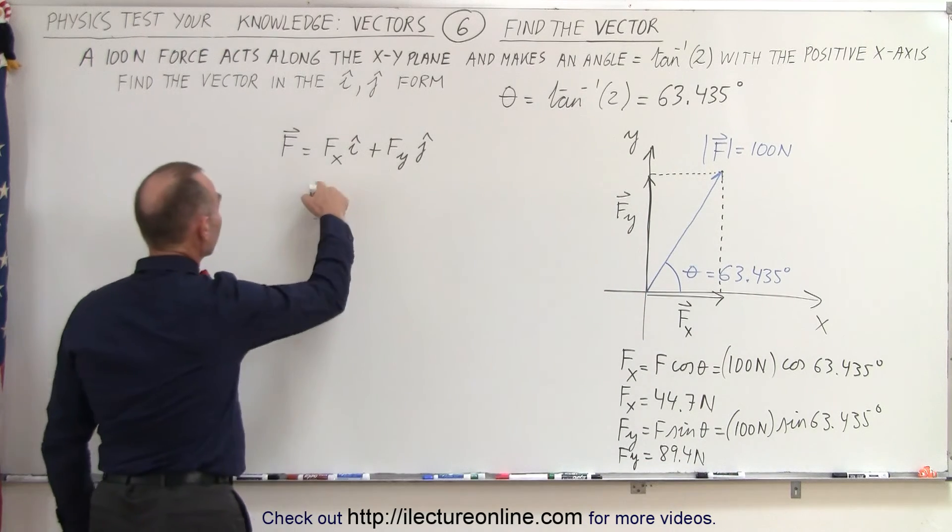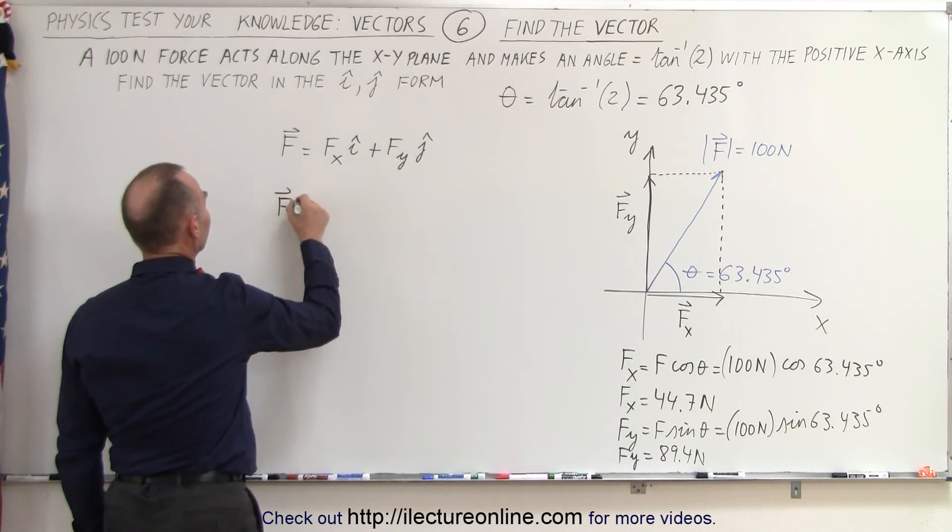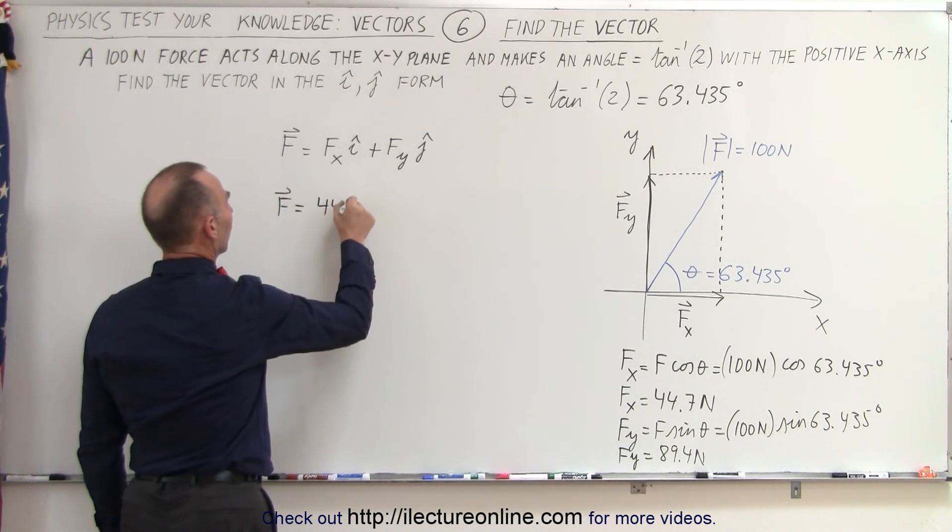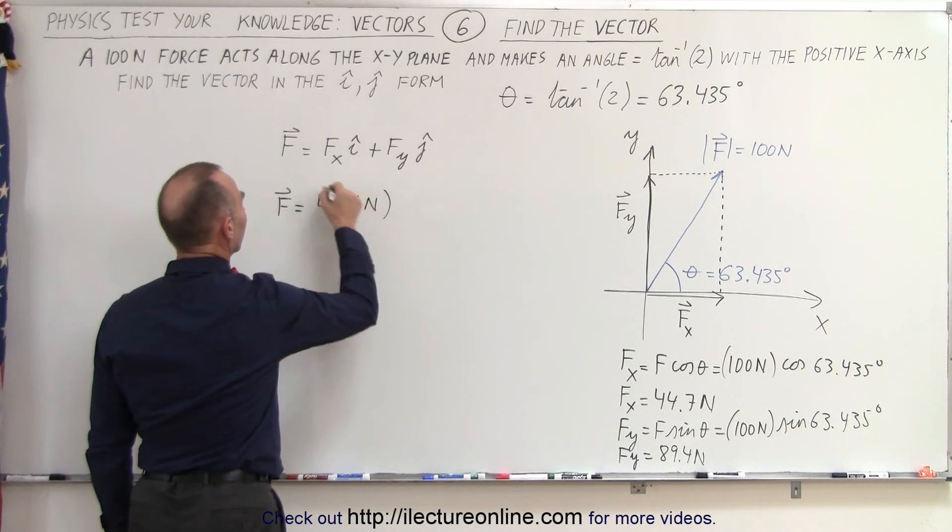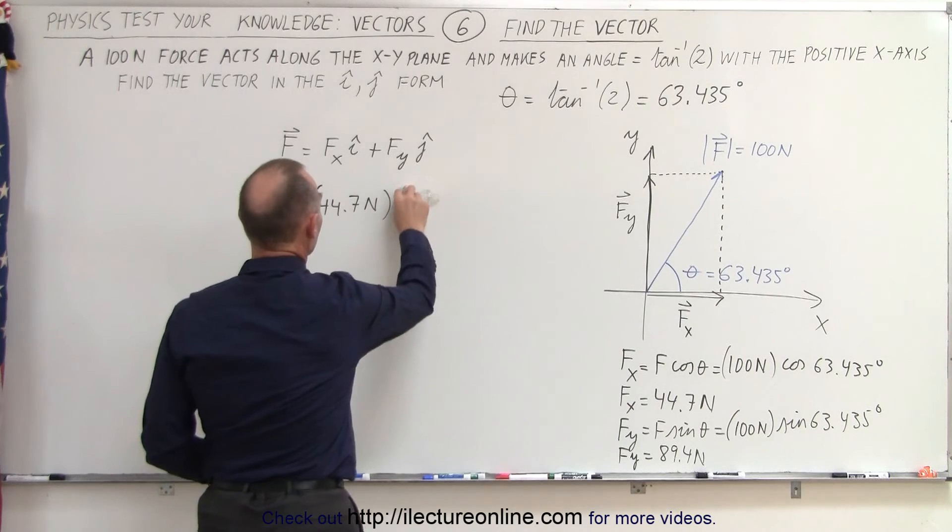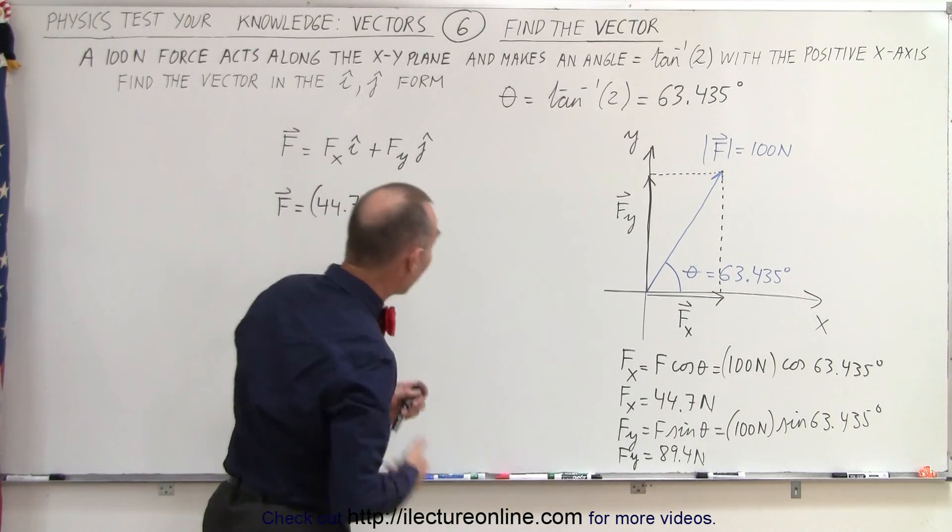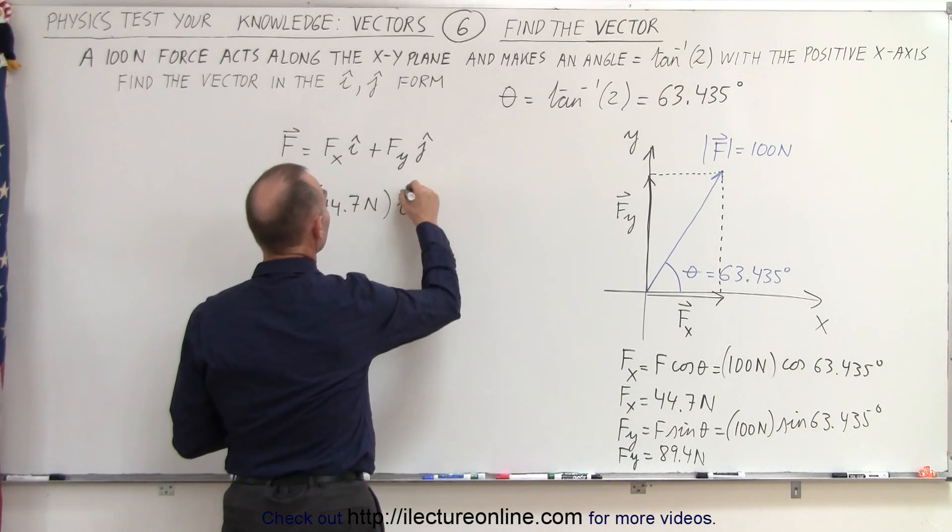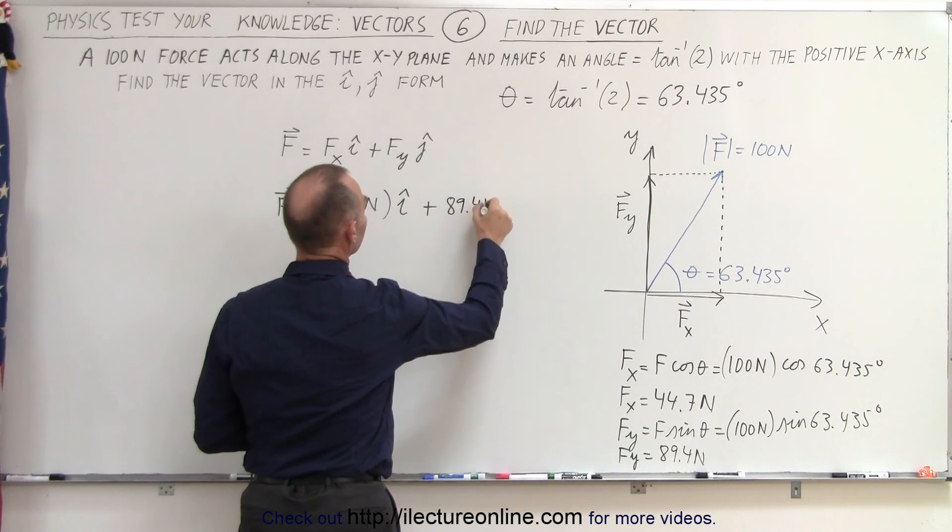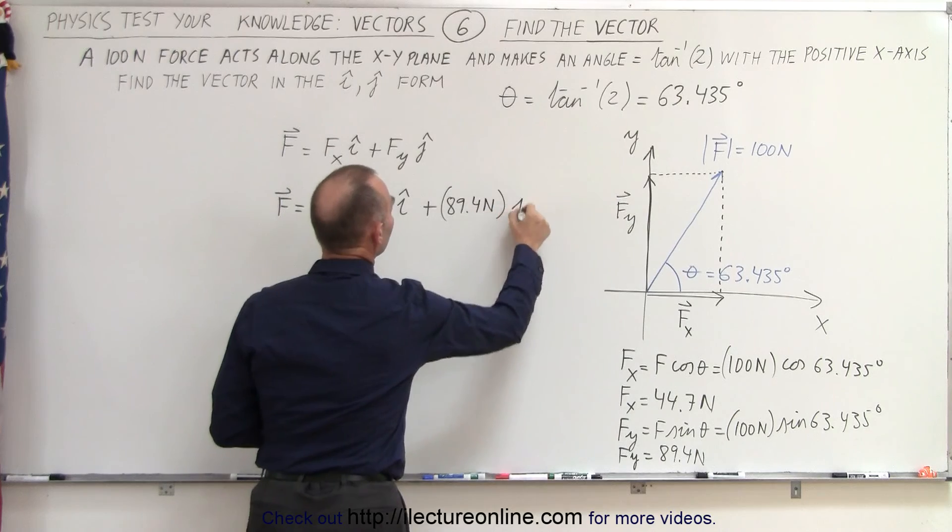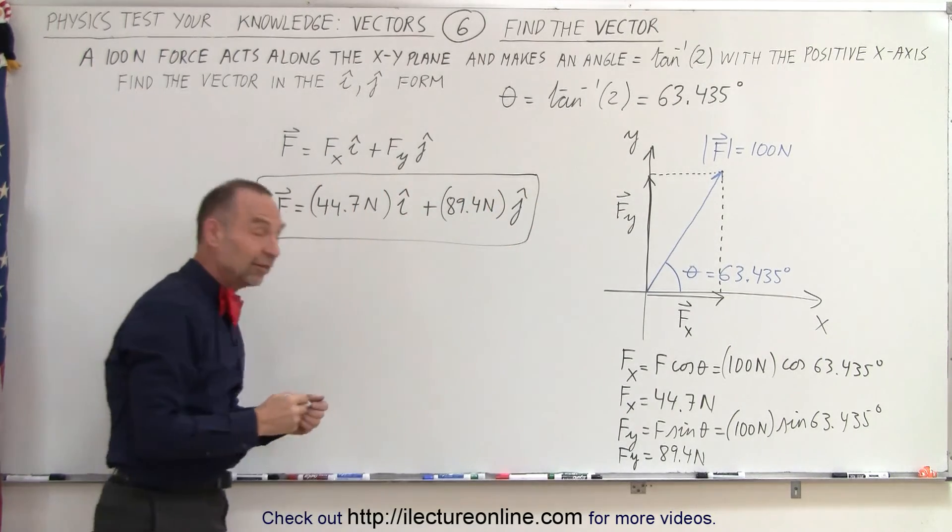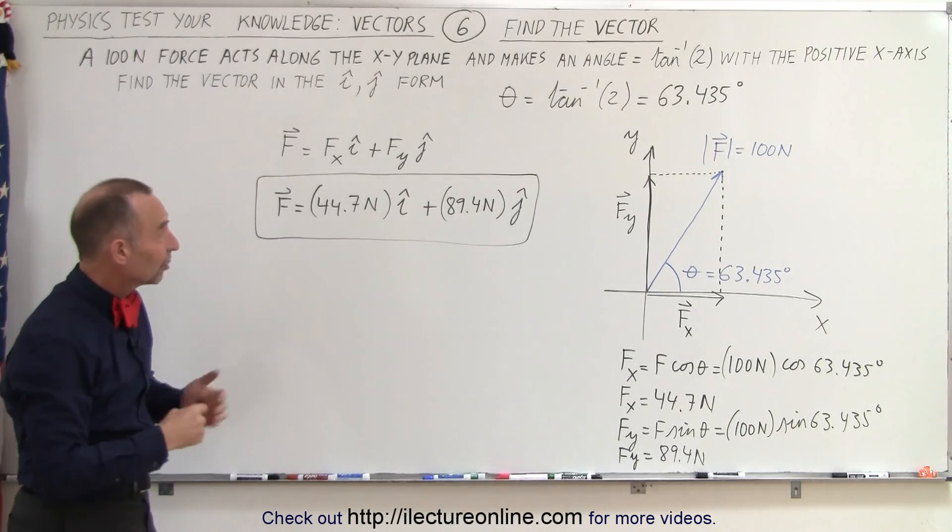So finally, when we plug those components in here, we have that the force vector F is equal to 44.7 Newtons in the X direction or the I direction. So we can either use X or I. We'll go ahead, and since we asked for I and J, we'll put in the I plus 89.4 Newtons in the J direction. And here's the force vector in its X and Y components or its I and J components.